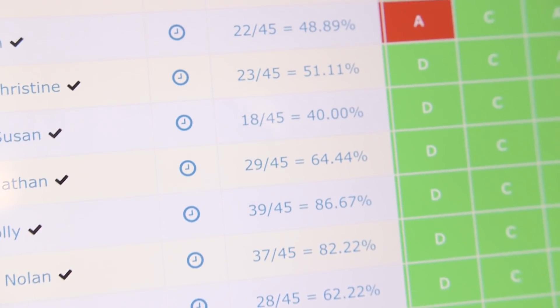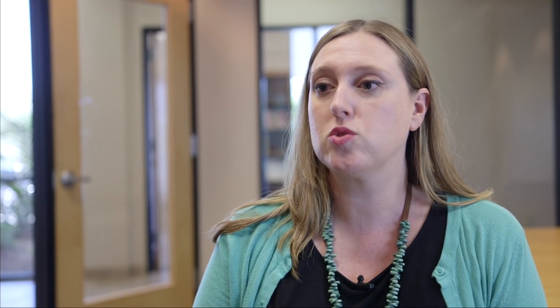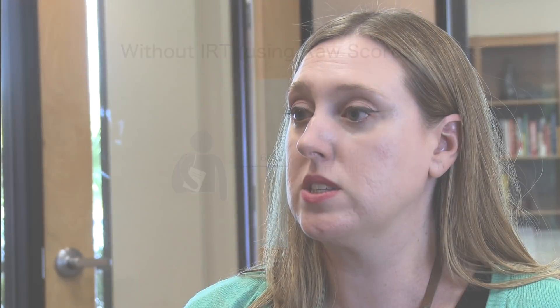Many assessment systems only provide raw scores, such as number correct or percent correct. Raw scores can only tell you about a student's performance on a specific set of items on a particular test. Say a student scored 60% correct on a test — is that good or bad? It depends on whether the items were easy or difficult. If the test had included different items, would the student still have scored 60% correct? There's no way to know, because raw scores don't tell us anything about a student's underlying ability or how the student would have performed on similar items.